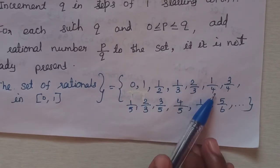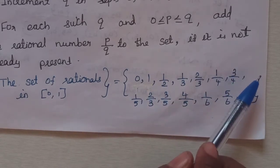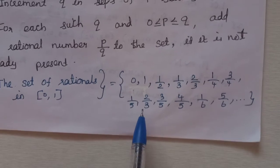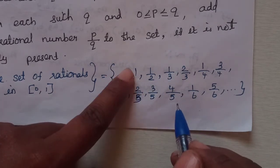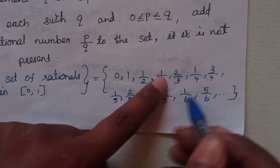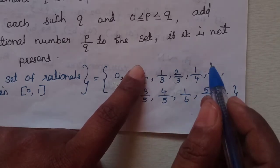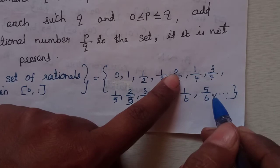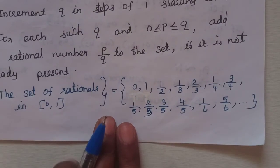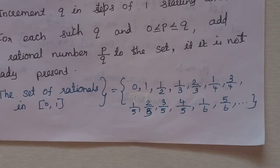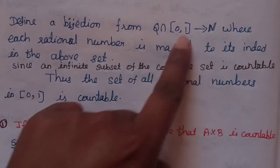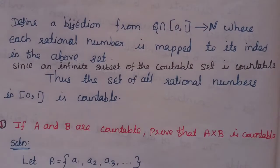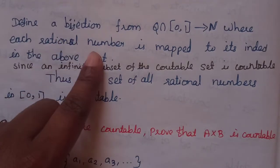Continuing: 1 by 4, 3 by 4, then for Q equal to 5 we add 1 by 5, 2 by 5, 3 by 5, 4 by 5. For Q equal to 6, 2 by 6 equals 1 by 3 which is already present, so we skip it. We add 5 by 6. Each rational number is mapped to its index in this enumeration.